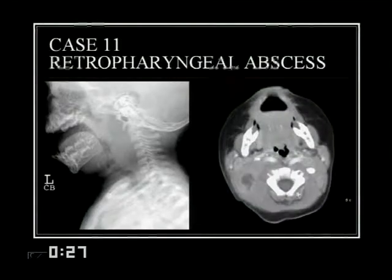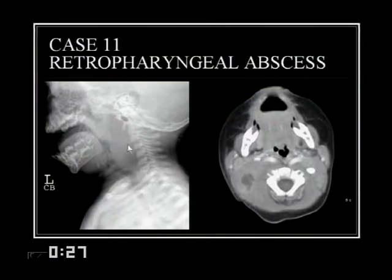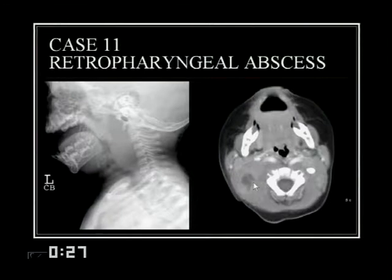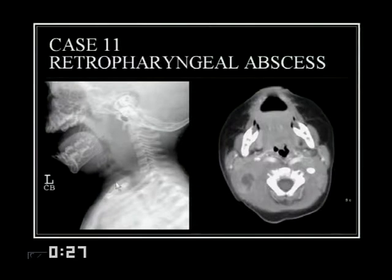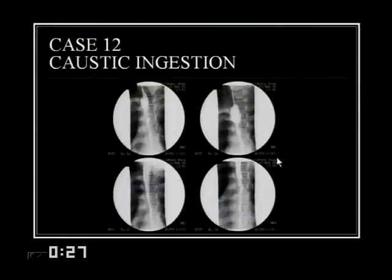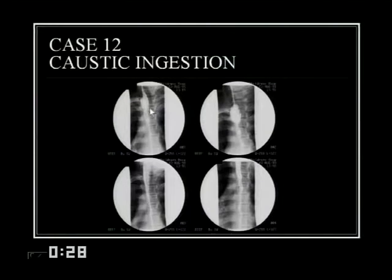The retropharyngeal soft tissues are excessively wide in this ten-month-old. The normal width can be up to the width of a vertebral body in a young child, but this abscess accounts for the increased width here. The clinician needs to know how much airway remains — in this child, the airway is probably adequate. The upper GI exam on a child who ingested lye shows dilatation of the upper esophagus transitioning to a narrow, irregular long segment, consistent with caustic ingestion.